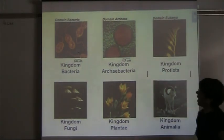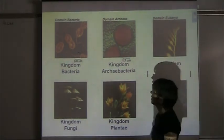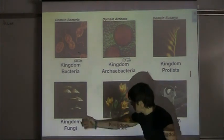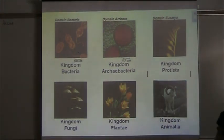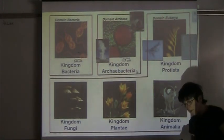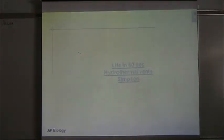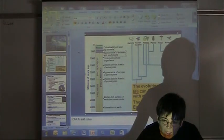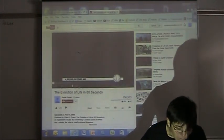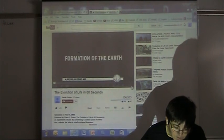That rounds up the story. We get back to all our kingdoms: bacteria, archaebacteria, protista, fungi, plants, and animals — what we have today — all grouped into three domains based on molecular evidence. There is a video link here called 'Life in 60 Seconds' that you can click on if you are at home to review these concepts visually.